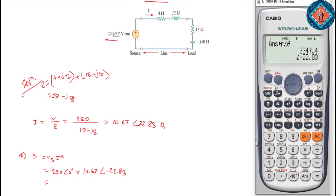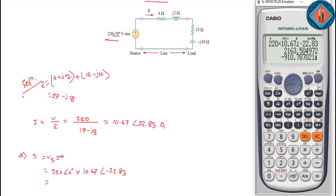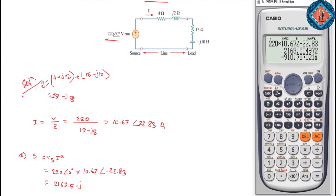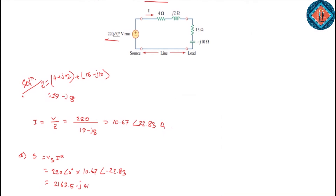220 multiplied by 10.67 at an angle minus 22.83. I will have 2347 — 2163.5 minus j910.8.